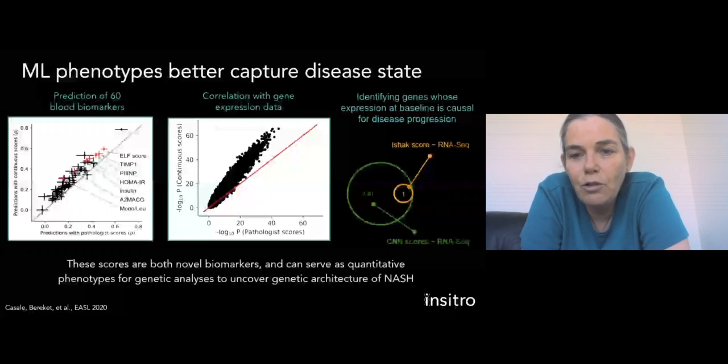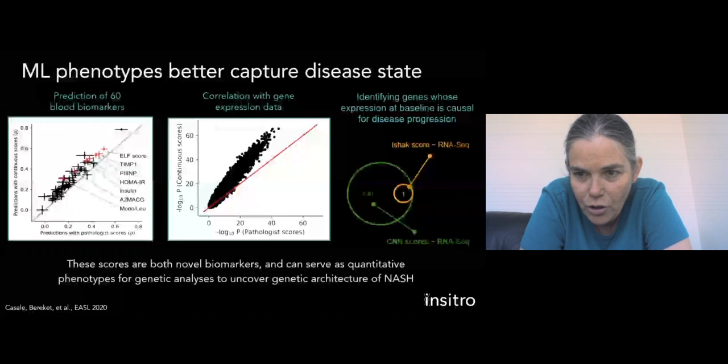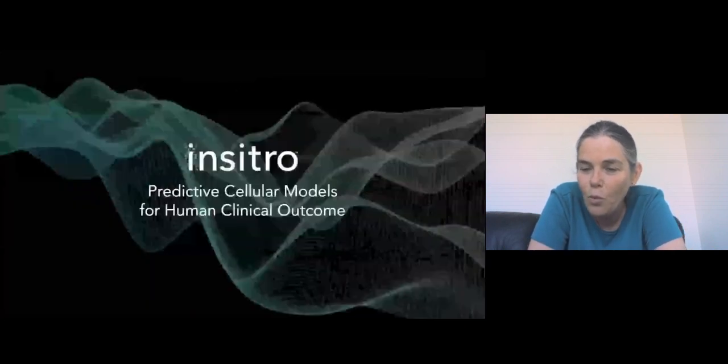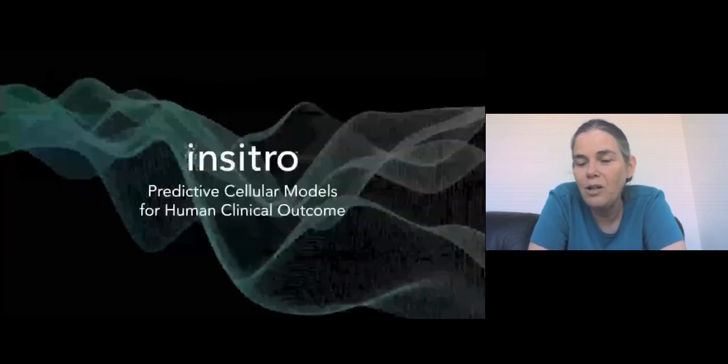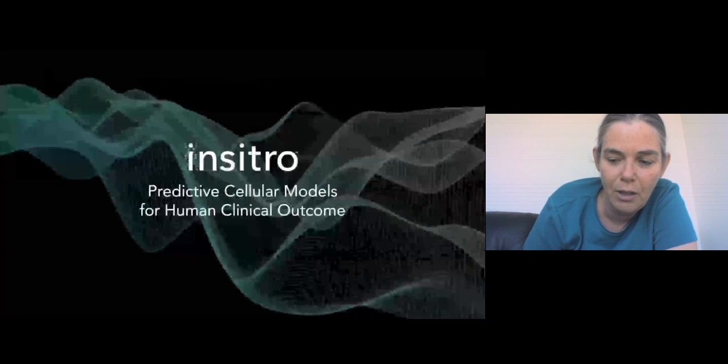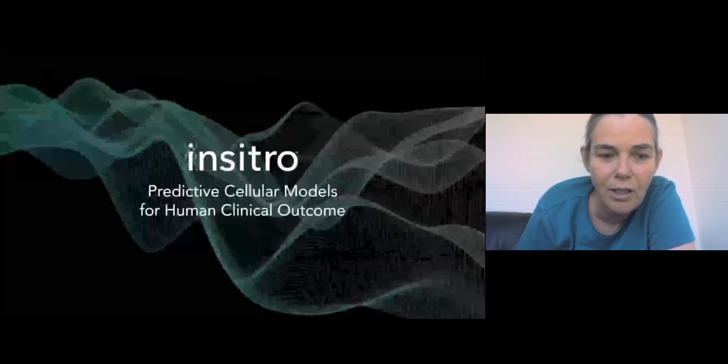And finally, when it comes down to the really important thing from the perspective of drug discovery, which is identifying genes whose expression at baseline appears to be causal for disease progression, then we see that the NASH activity score, the pathologist called fibrosis score, is able to identify one such gene, whereas our analysis is able to identify 130. And those were really fundamental in helping us identify new and important targets that are implicated as part of the genetic architecture of NASH.